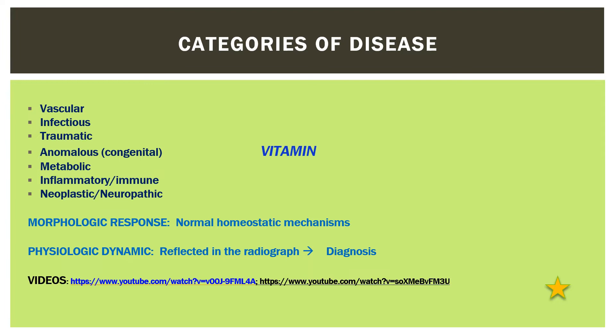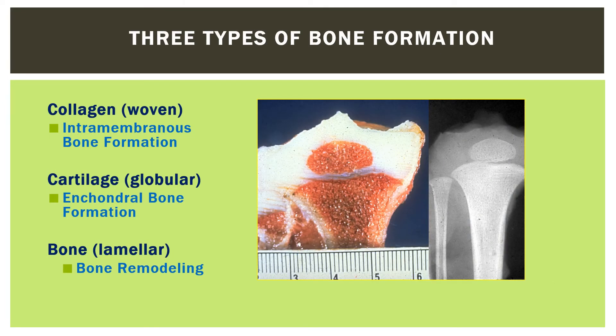The abnormal represents some manifestation of the normal. Bone forms in the embryo by osteoblasts on a pre-existing mesenchymal tissue framework, either collagen — leading to intramembranous or woven bone — or calcified cartilage, forming enchondral bone.